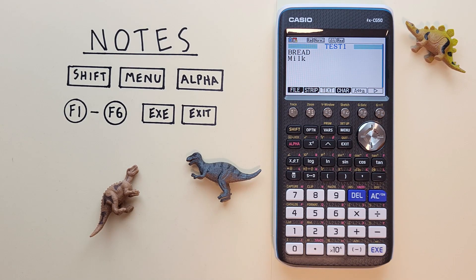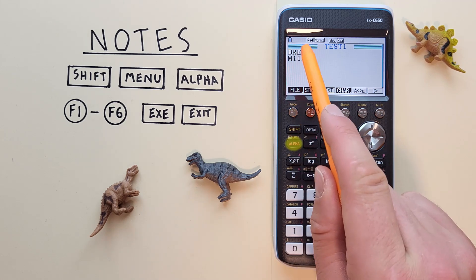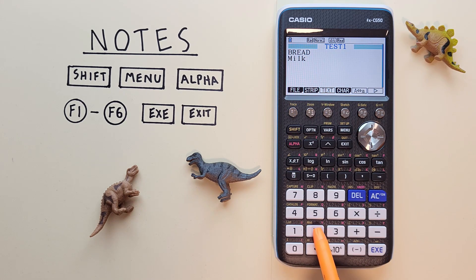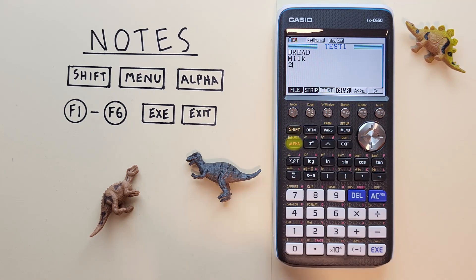And next we want to get two eggs. So to get numbers again we go alpha to turn off our alpha lock and hit the two, and then turn back on our alpha lock. Put a space. We can hit the decimal key here and then enter eggs.